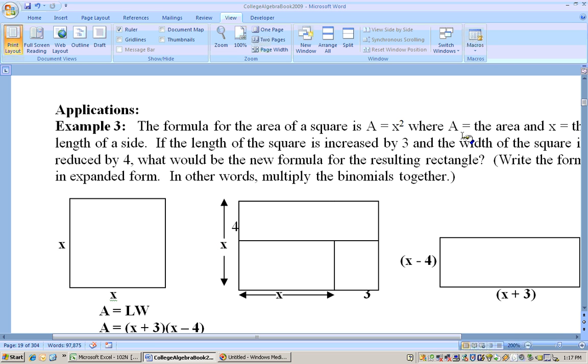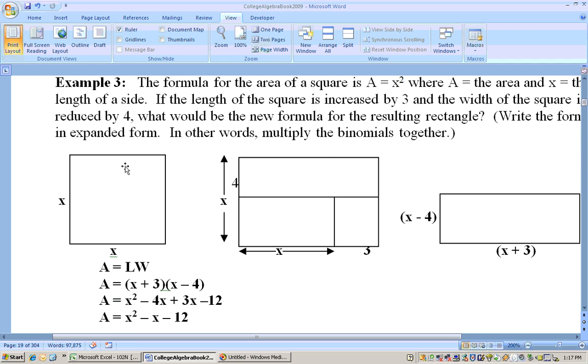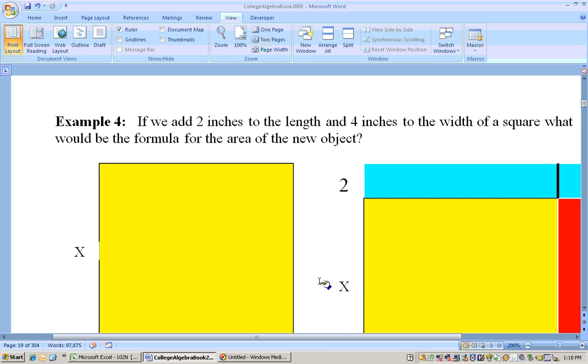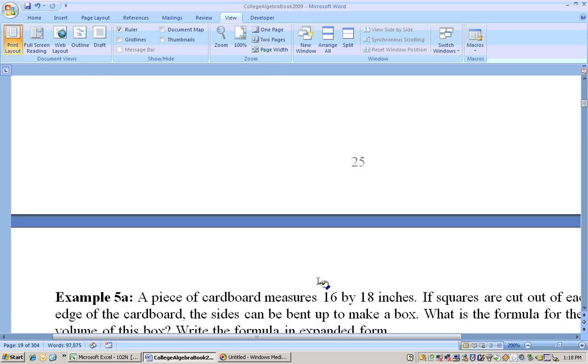It says the formula for the area of a square is A equals x squared. A is the area, x is the length of a side. And it says what would be the area if the length was increased by 3 and the width was reduced by 4. So it was x by x. Now it's x plus 3 by x minus 4. So area is just length times width, so we need to take x plus 3 times x minus 4. And you could foil those together either by hand or with Excel.